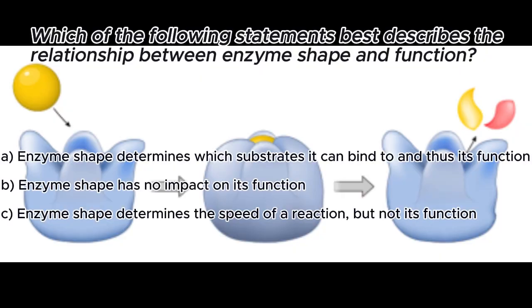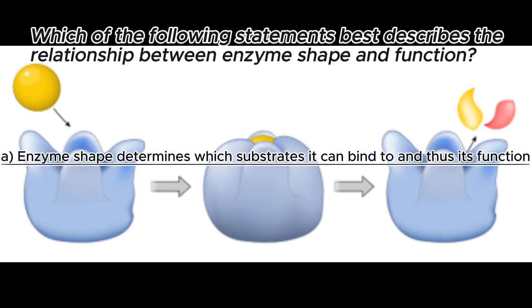Which of the following statements best describes the relationship between enzyme shape and function? The correct answer is A: Enzyme shape determines which substrates it can bind to and thus its function.